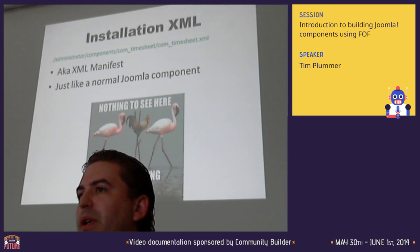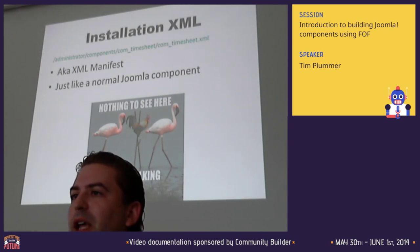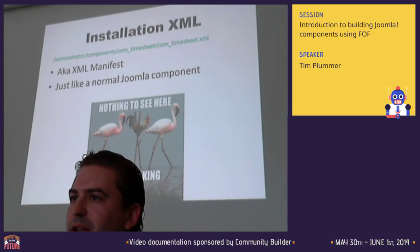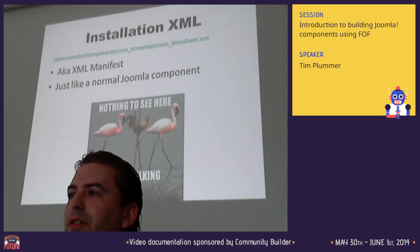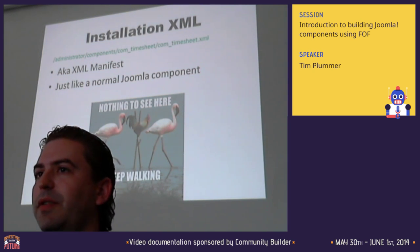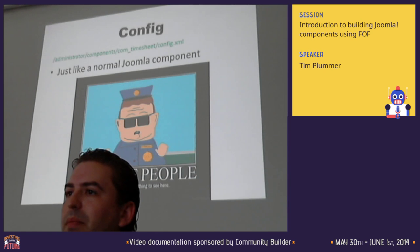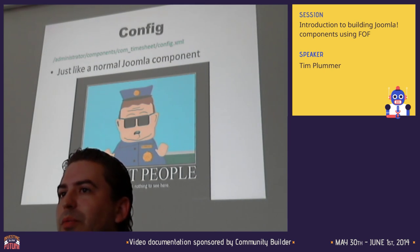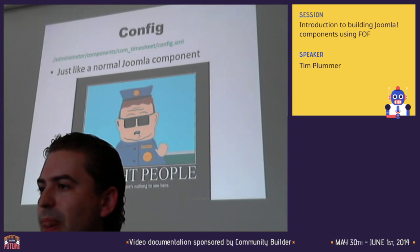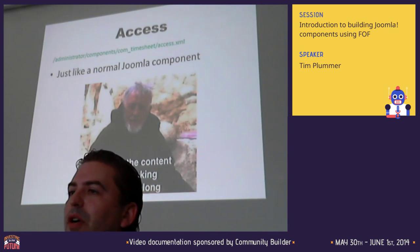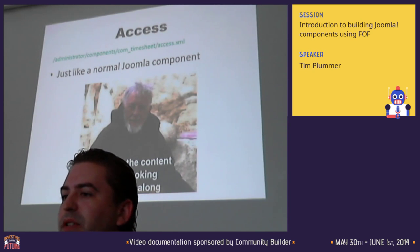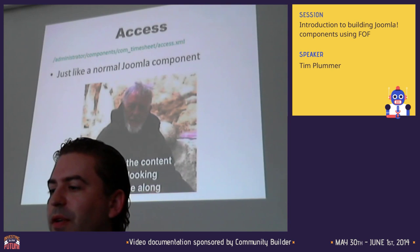The installation XML file defines all the files in the component - if you're familiar with normal Joomla component development, it's pretty much exactly the same: author, version, component name, front end files and folders, back end files and folders, installation SQL file locations. There's nothing FOF-specific in there. Same with the config file that defines menu item parameters, and the access file that controls all the permissions available to the component - both are exactly the same as a normal Joomla component.